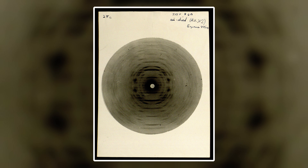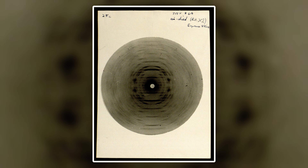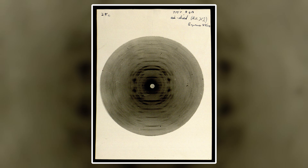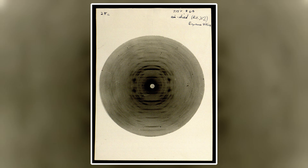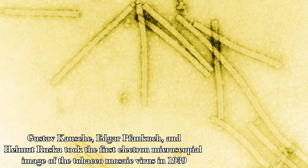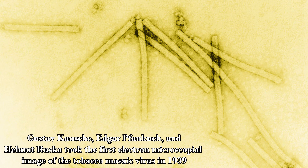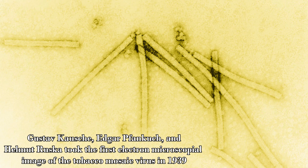Regardless, upon crystallization of the tobacco mosaic virus, scientists were able to determine the virus's structure with X-ray crystallography and also were able to take the first pictures of the virus in the coming years, as electron microscope technology advanced.